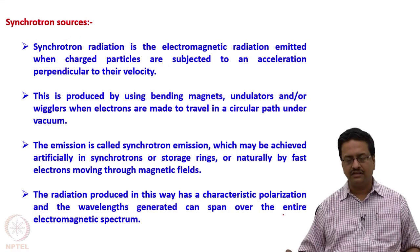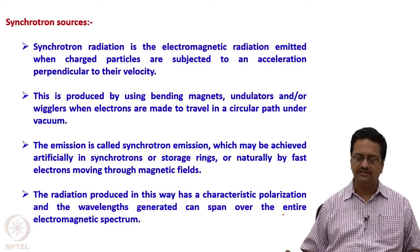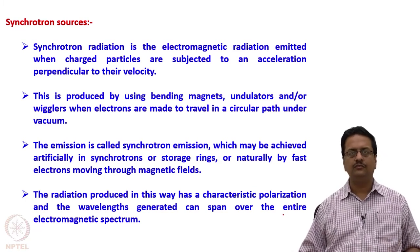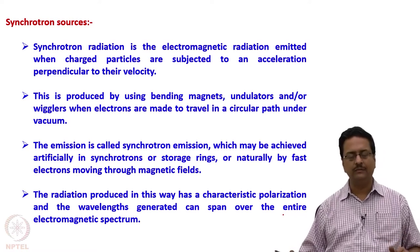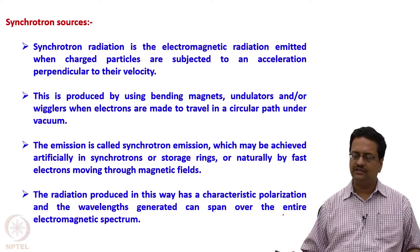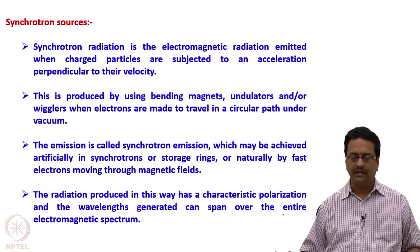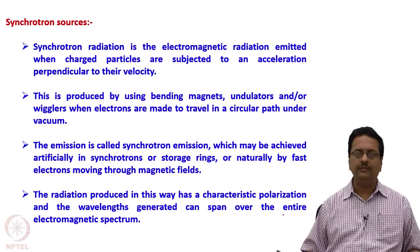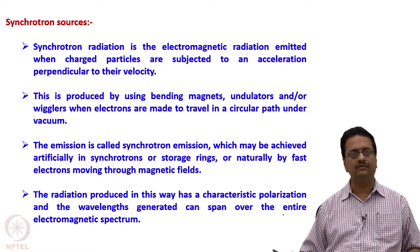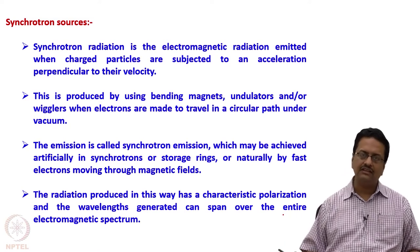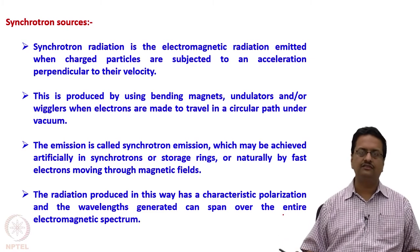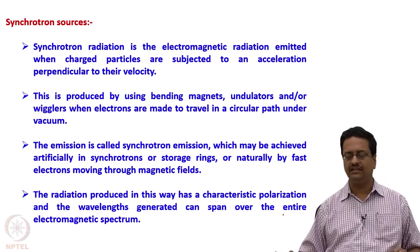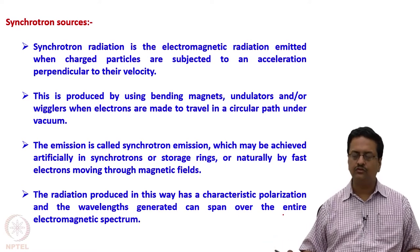The next higher intensity source is synchrotron radiation, which is not available in most countries — there are very few synchrotron facilities around the world. Synchrotron radiation is the electromagnetic radiation emitted when charged particles are subjected to an acceleration perpendicular to their velocity. This is produced using bending magnets, undulators, and wigglers when electrons are made to travel in a circular path under vacuum at very high velocity. The emission obtained while bending these electrons from their path is called synchrotron radiation, which may also be achieved naturally by fast electrons moving through magnetic fields.